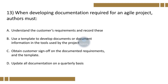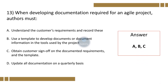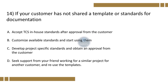Question 13. When developing documentation required for an agile project, authors must: Option A, understand the customer's requirement and record this; B, use a template to develop documents or document information in the tools used by the project; Option C, obtain customer's sign-off on the documented requirements and the template; D, update all documentation on a quarterly basis. The correct option is A, B and C.